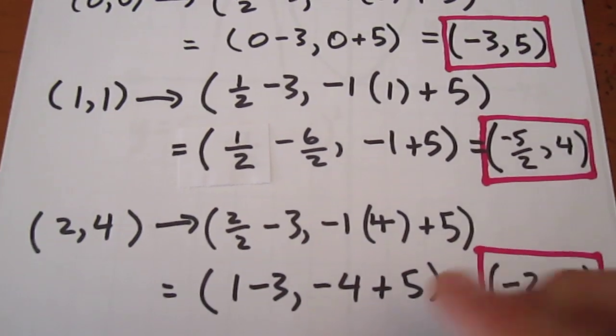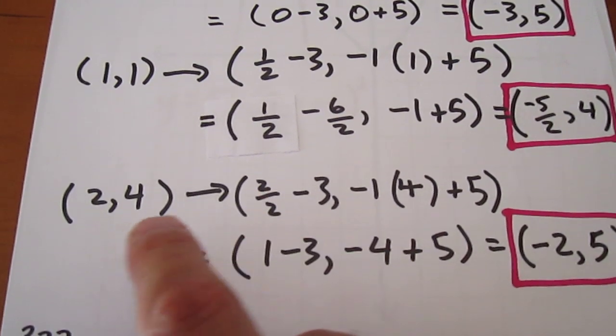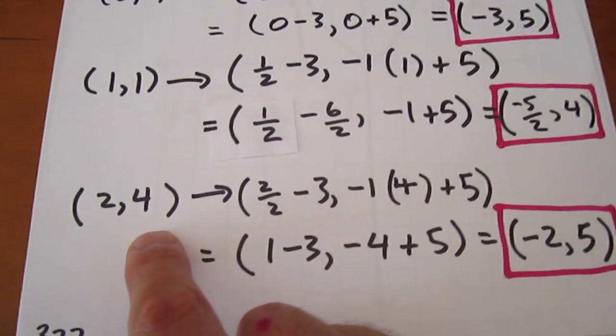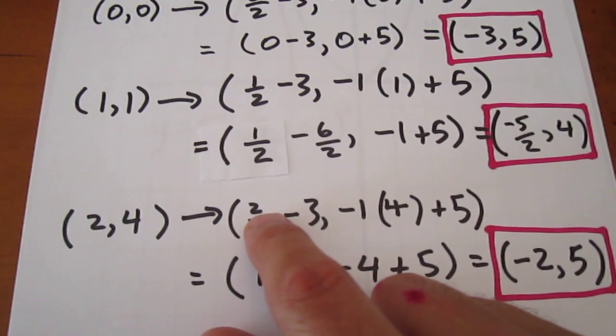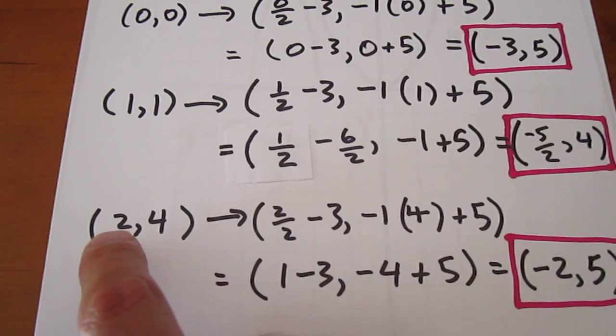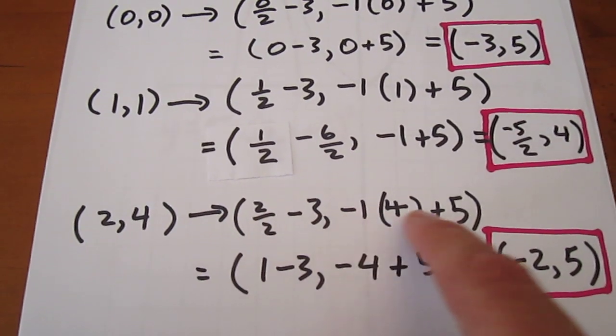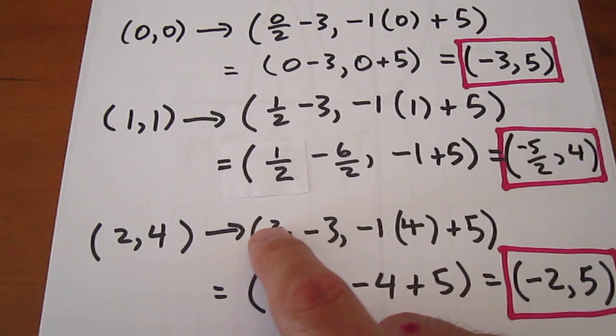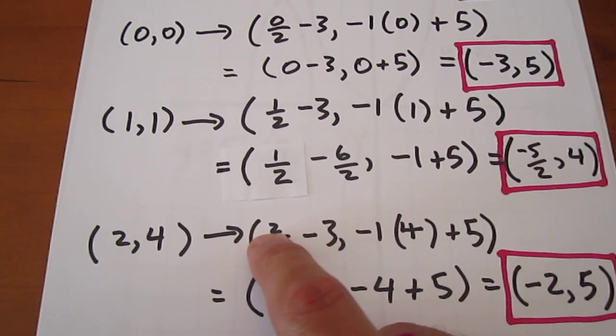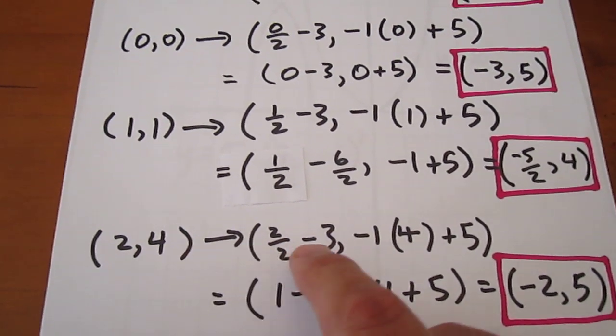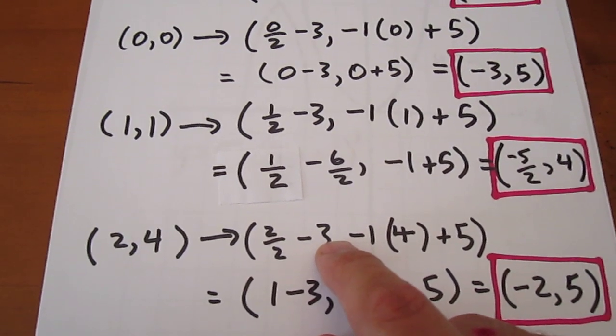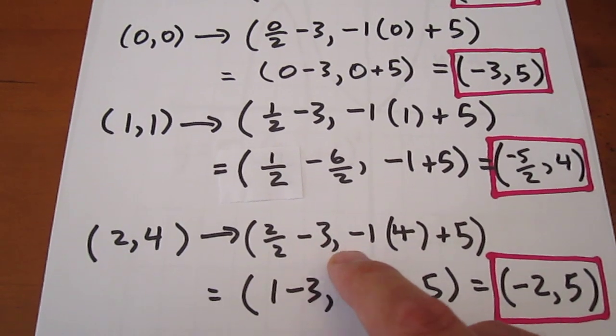How does that happen? Well, for instance, what we do here, let's look at the last one, 2, 4. What we always have in the machine, x, y mapping onto x over k plus d, ay plus c. So that tells me that the x coordinate I'm thinking about here is 2, which it is. The k value is 2, and the d value is negative 3. We learned that earlier on a previous page.